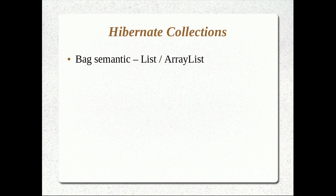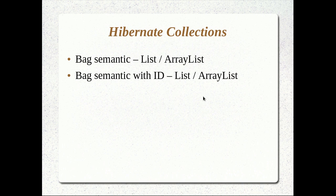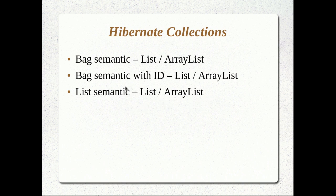A bag is similar to a real-life bag — it doesn't matter how you put things inside it. You can put things into a bag in any order and retrieve them in any order. That is the bag semantic that Hibernate supports. You can implement a bag semantic by using either a list or an ArrayList. Similar to a bag, we also have a bag with an ID, which can also use a list or ArrayList and will have an index property so you can pull up items depending on the ID you're supplying. The next one is the list semantic — again a list or ArrayList — but the key difference is that a list can be ordered, a sorted list, whereas a bag doesn't care which order you get the data.